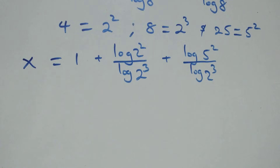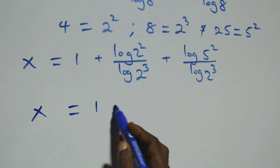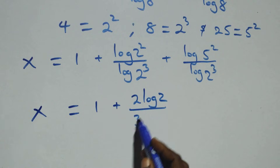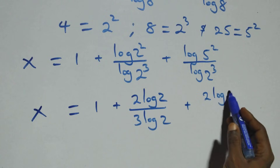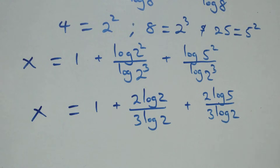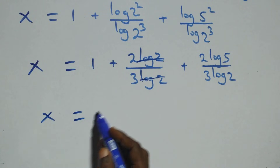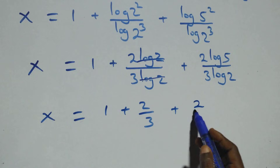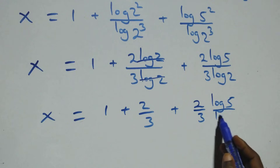Then we apply the power rule of logarithm: 2 comes out here, 3 comes out here, 2 comes out here, and also 3 comes out here. We now have x equals to 1 plus 2 log 2 over 3 log 2 plus 2 log 5 over 3 log 2. Here log 2 cancels each other, so this becomes x equals to 1 plus 2/3 plus 2 over 3 times log 5 over log 2.